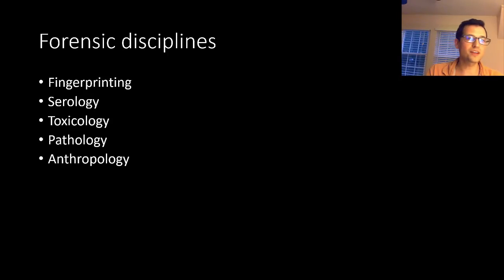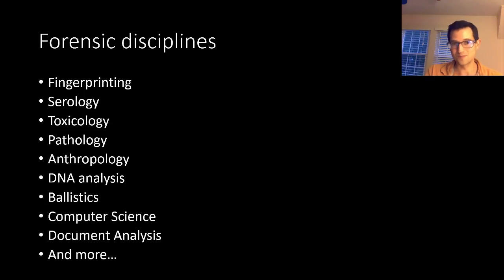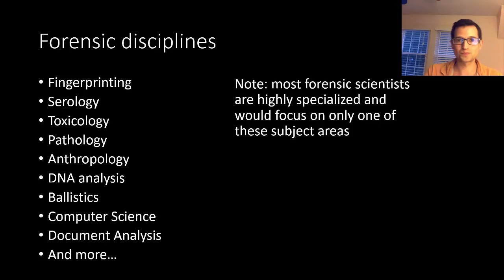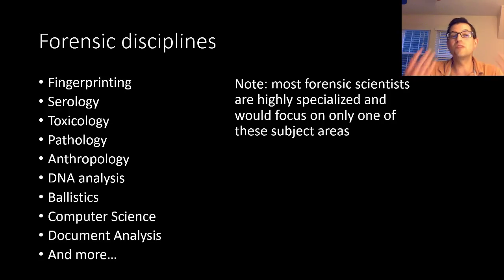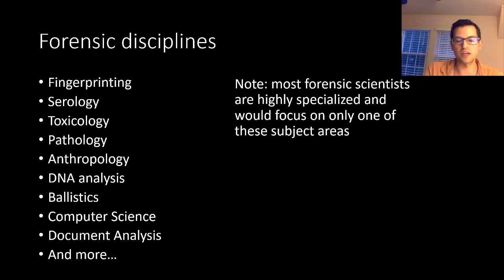So here you have it again to review: fingerprinting, serology, toxicology, pathology, anthropology, DNA analysis, ballistics, computer science, document analysis, and others not listed here. It's important to note that most forensic scientists are highly specialized and would really only focus on one of these areas. It would be very surprising to find someone who could carry out sophisticated DNA analysis, forensic anthropology work, computer science work, and toxicology fingerprinting. Typically, folks are specialists who perform just one of these, though some people may be capable of doing multiple such tasks.